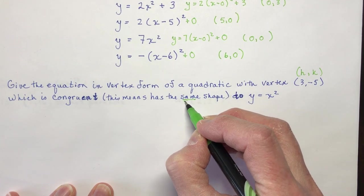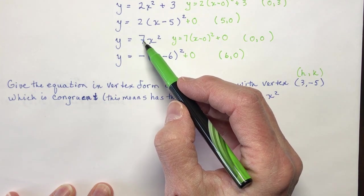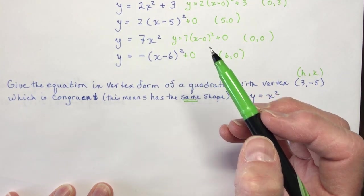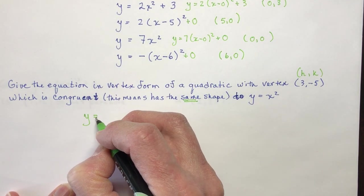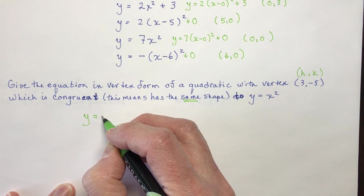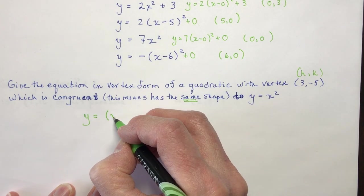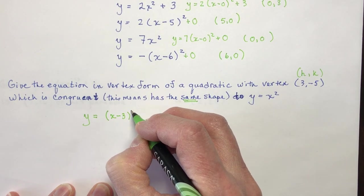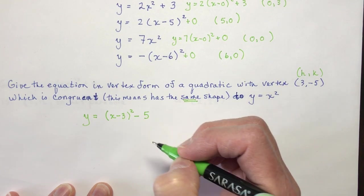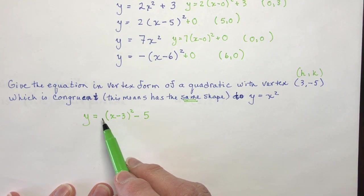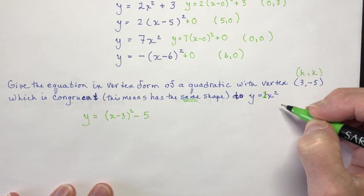So if it has the same shape, that means that there is no vertical stretch or compression. So in other words, we can just write this equation as y equals, we don't have any a, we have a shift. So we've shifted, the h is 3. So we have (x minus 3) squared minus 5. Okay, so this one would have the a value of 1, which is the same as the a value for this function, 1x squared.